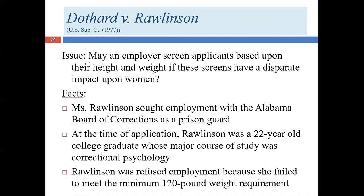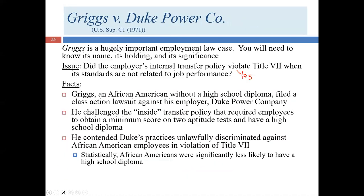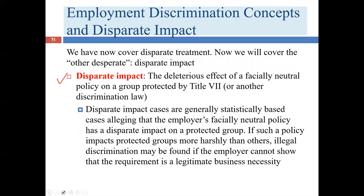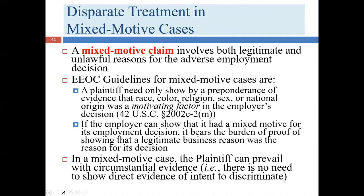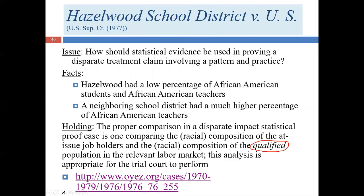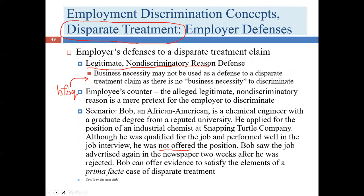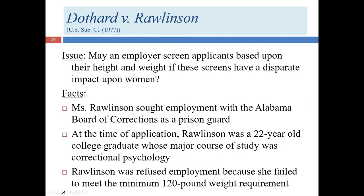Now let's talk about the Dothard case. This is a U.S. Supreme Court case from around the same period — less important than Hazelwood perhaps, but still pretty important. The question here is: may an employer screen applicants based upon their height and weight if these screens have a disparate impact upon women? The answer is usually no. In this case, Ms. Rawlinson, a recent college graduate who weighed about 110 pounds, applied to become a prison guard — a male prison. She had strong credentials, having majored in correctional psychology. When she applied, she was turned away because she did not weigh the required 120 pounds.